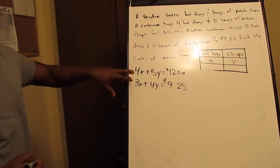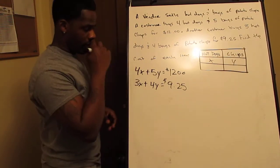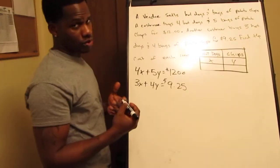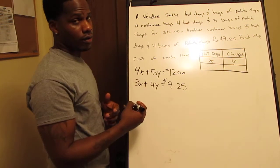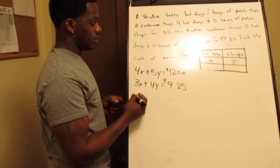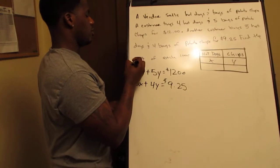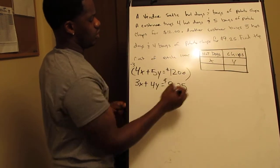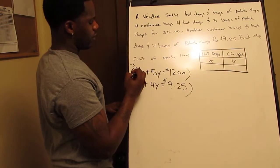Now we're going to neutralize X — we have to get rid of X somehow. If you do four times three, that's 12, and three times four is also 12. We want to eliminate X, so we multiply the first equation by negative three and the second equation by four.